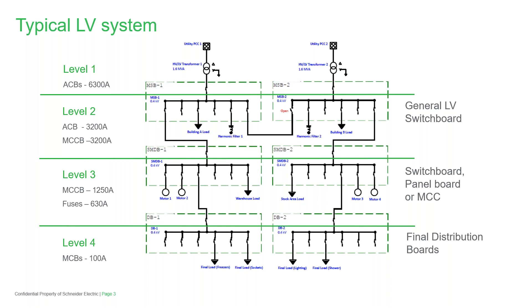Level two devices fit large or critical loads, with protection being a mixture of air circuit breakers and moulded case circuit breakers rated up to 3200 amps. In level three, we find a mixture of switchboards, panel boards, and motor control centres with outgoing devices — mainly moulded case circuit breakers and fuses, typically rated up to 1250 amps. Finally, at level four, we find our final distribution boards populated with miniature circuit breakers, residual current devices, and sometimes fuses, typically rated up to 100 amps. Today's goal is to discover how we can coordinate such systems, ensuring continuity of supply and minimising the impact of any fault.